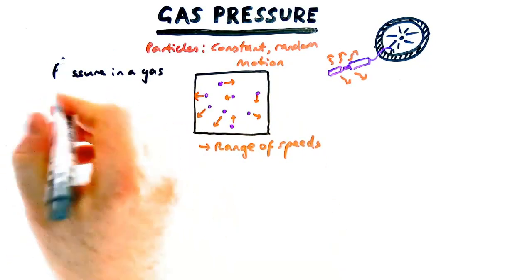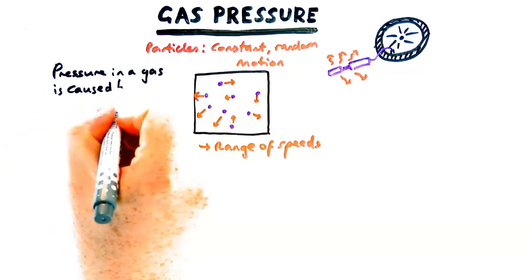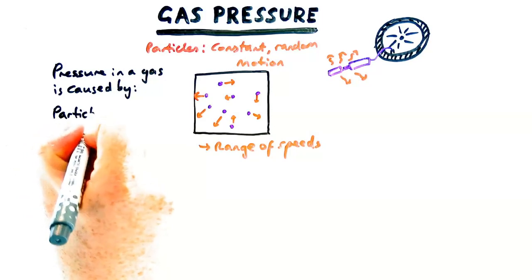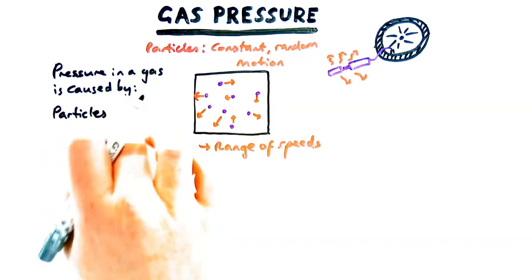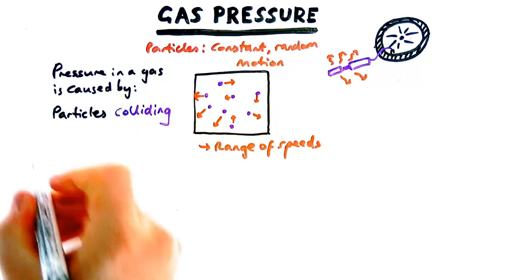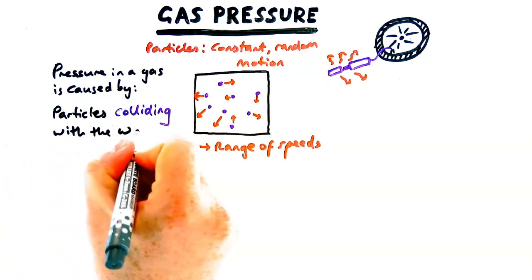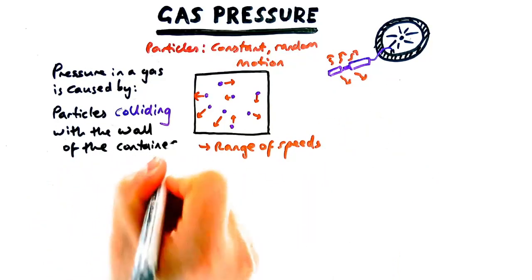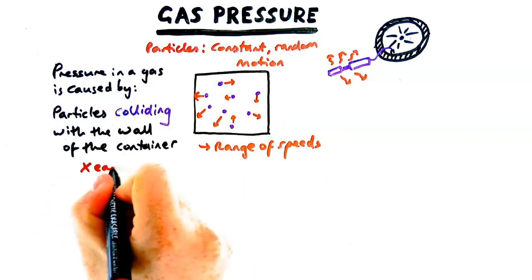So let's look at a perfect kind of three mark answer of what causes pressure in a gas. So for the pressure to be caused what we need is a particle to collide with the wall of the gas. Now it does collide with particles in the gas as well but it's particles colliding with the wall of the container that causes pressure. So particles collide with the wall of the container.